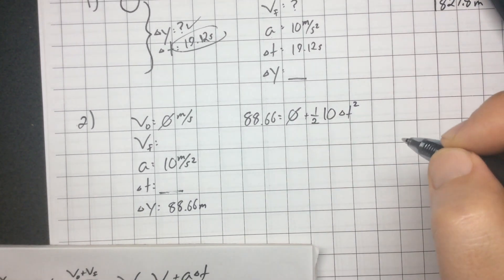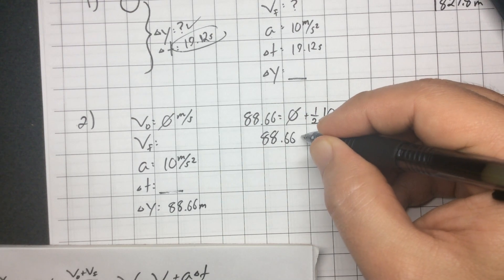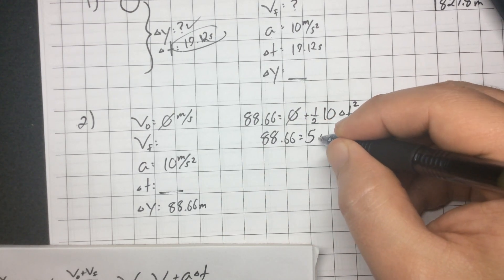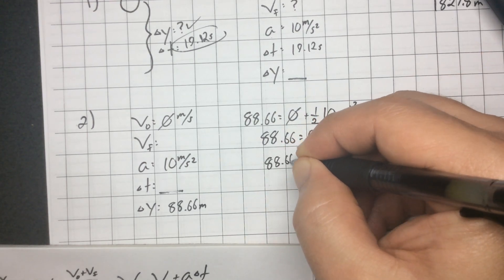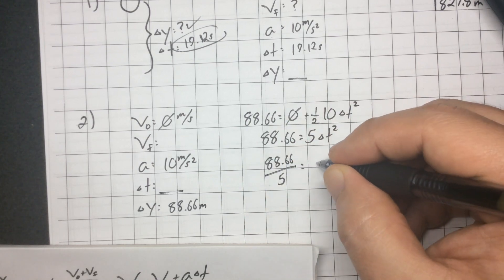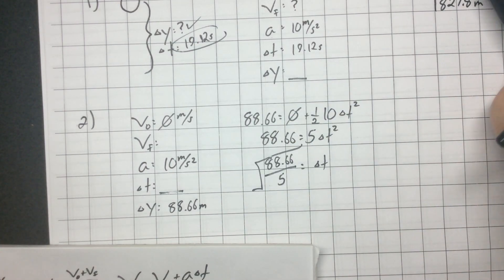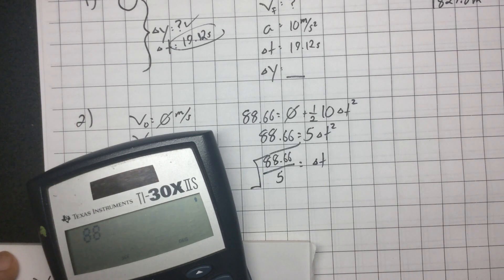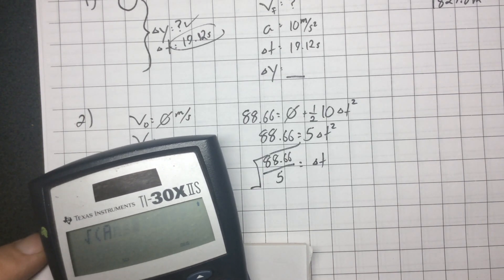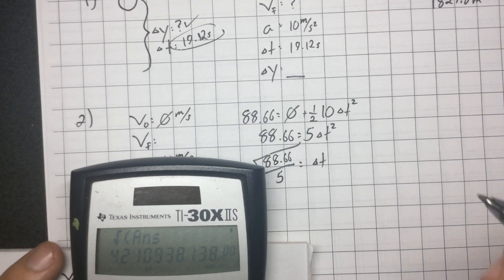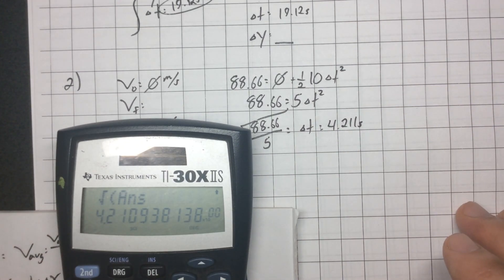I'm solving for delta t squared. So I've got 88.66 equals 5 times delta t squared. A little algebra says divide by 5: 88.66 divided by 5 gives us t squared, and then square root both sides. That gives me 4.211 seconds — that is the correct answer for number 2.